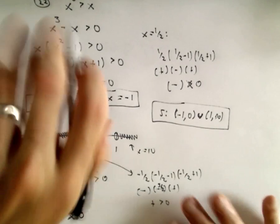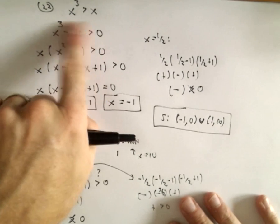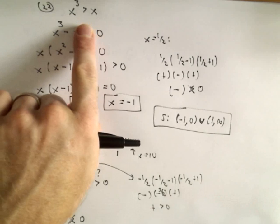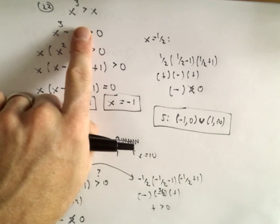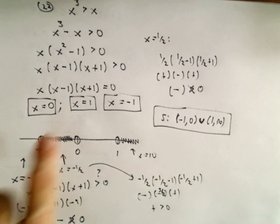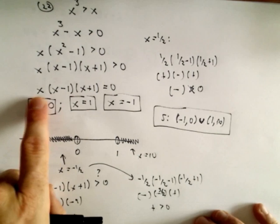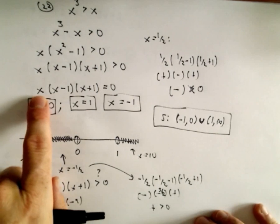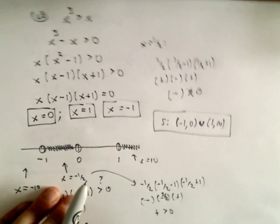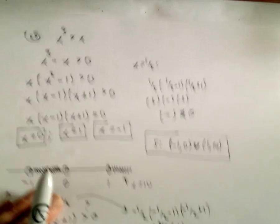Be careful: a lot of people might start off by dividing both sides by x, and that does not work — because then you wouldn't get the critical point of x equals 0. So be careful, don't make that mistake, don't divide both sides by x.